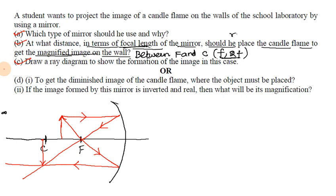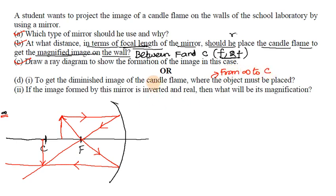Question C: to get the diminished image of the candle flame, where must the object be placed? For a diminished image, the object must be placed from infinity to the center of curvature, i.e., beyond C.